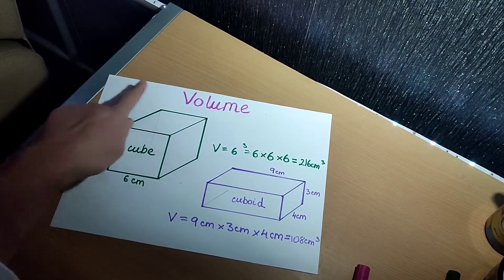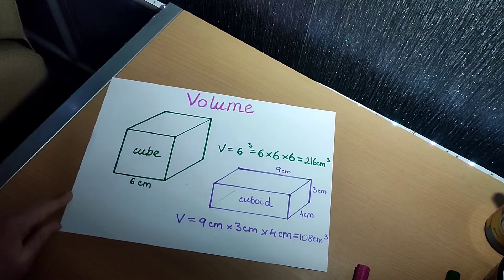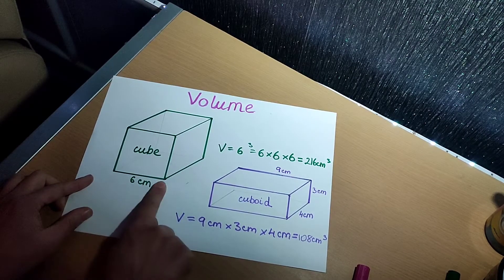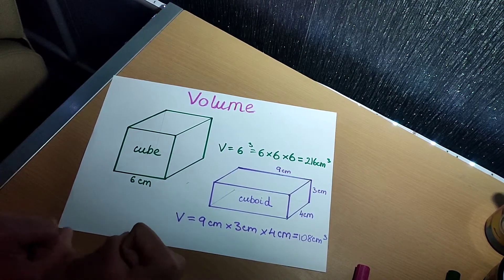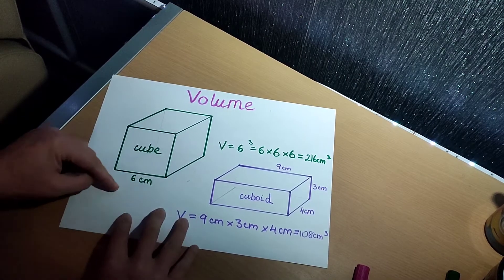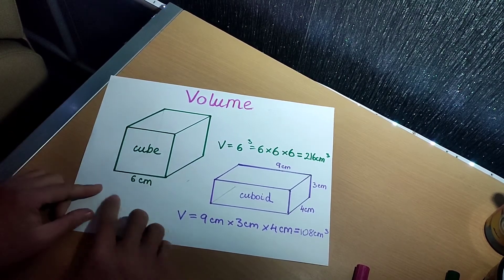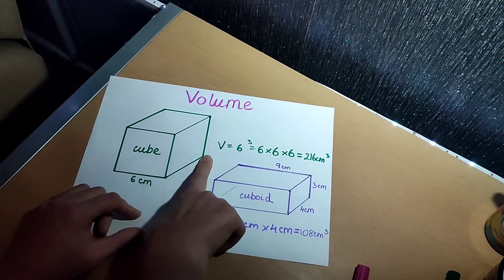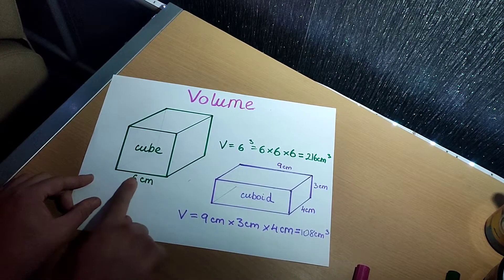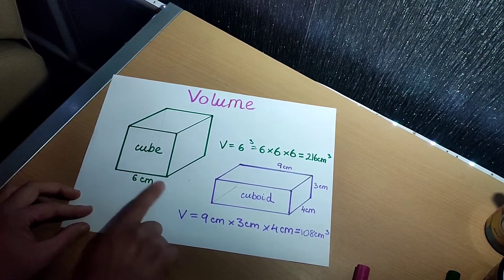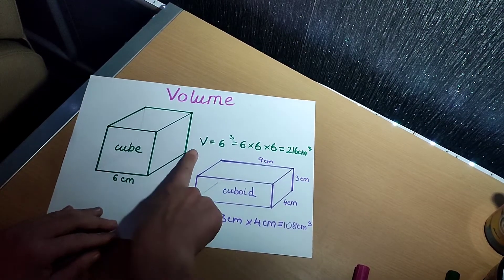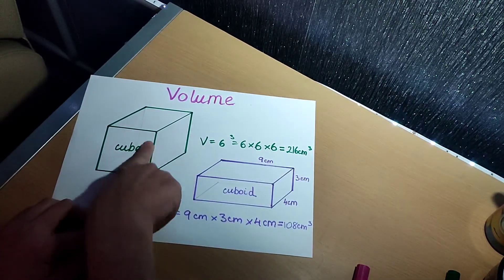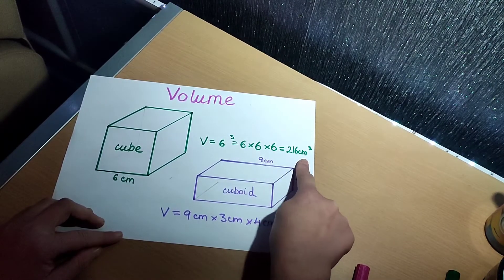So where we put centimeters, millimeters, or meters, we always have a little three there meaning cubed. Let's have a look — this is a cube. I drew it so it doesn't look very cuby, but it's supposed to be a cube. What do we know about a cube? A cube is like a 3D square, so all of the edges are the same length — the width, height, and depth are all the same. So to work out the volume of the cube we only need to know the size of one edge. Volume of this cube: 6 times 6 times 6 is 216 centimeters cubed.